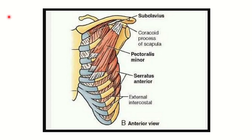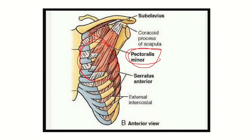Here we can see the chest wall diagram. We can see the midline, the sternum, the scapula, the clavicle, and the ribs. At the level of the third, fourth, and fifth ribs there is a muscle — this is the pectoralis minor muscle. It lies in the chest wall at the level where the breast is usually present.